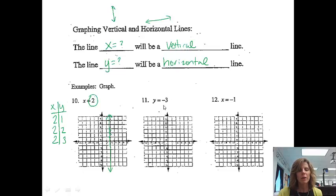Problem 11, y equals negative 3. Well, again, I know from looking up at my notes that the line y equals will be a horizontal line. So I'm going to go down to negative 3 and make a horizontal line that goes through y equals negative 3.